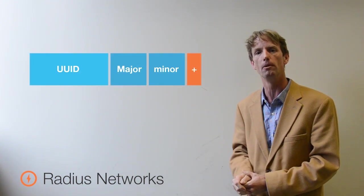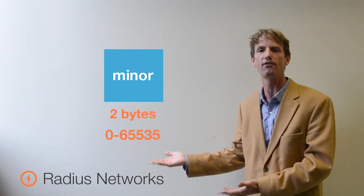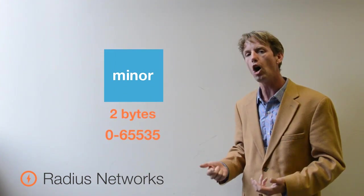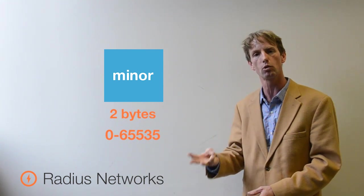The third identifier is called the minor. It is a two-byte value that ranges from 0 to 65535. This is often used as a sequential ordering of your beacons: number one, number two, number three, number four.